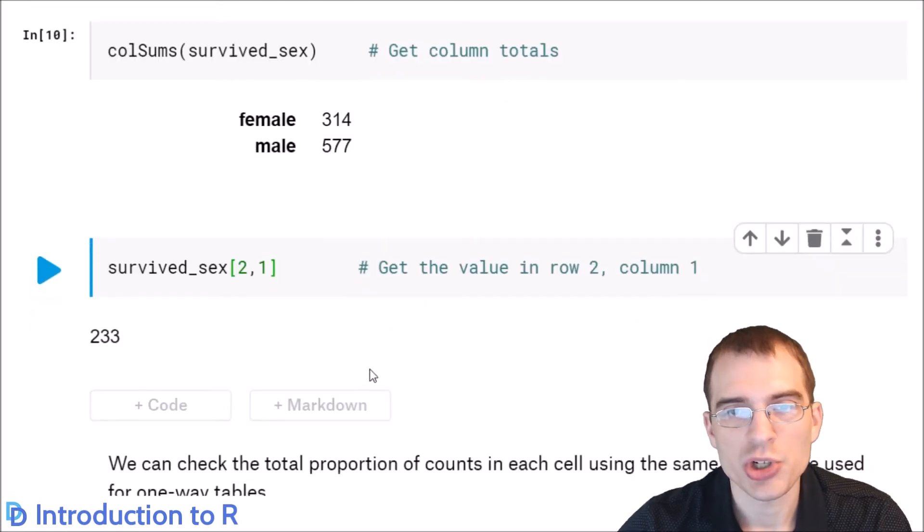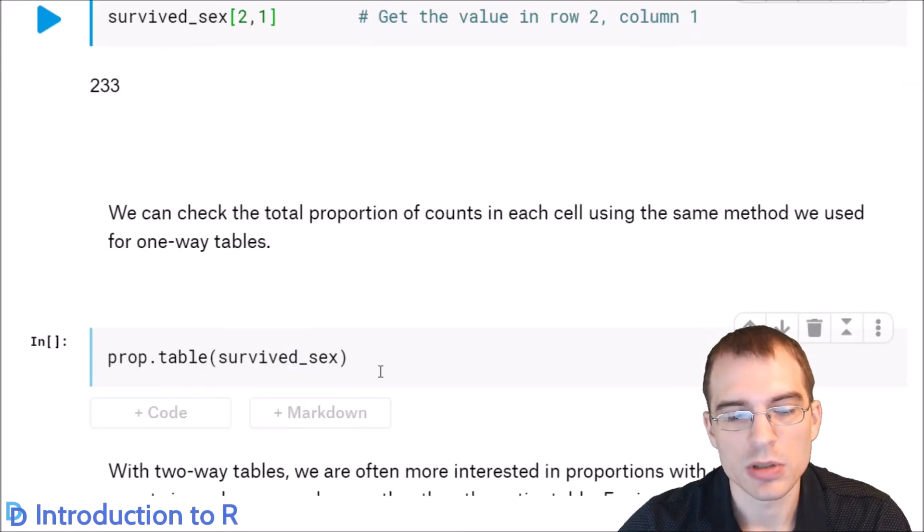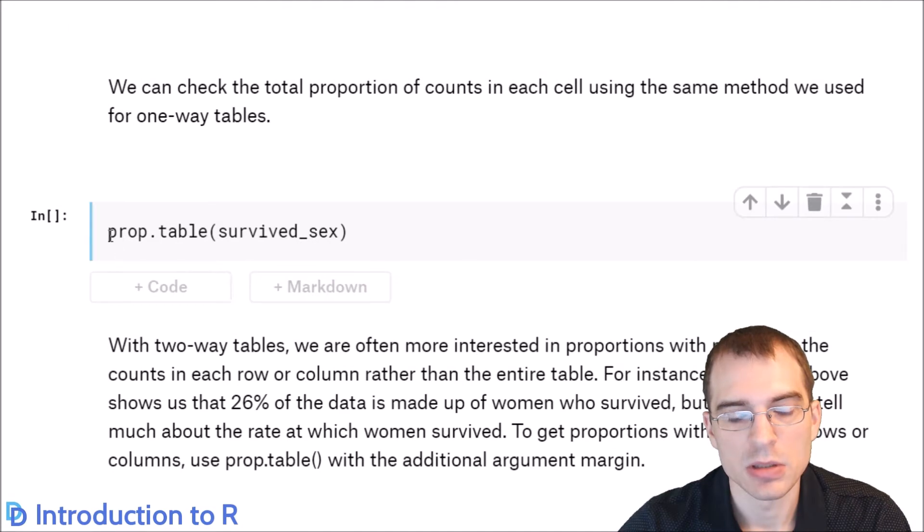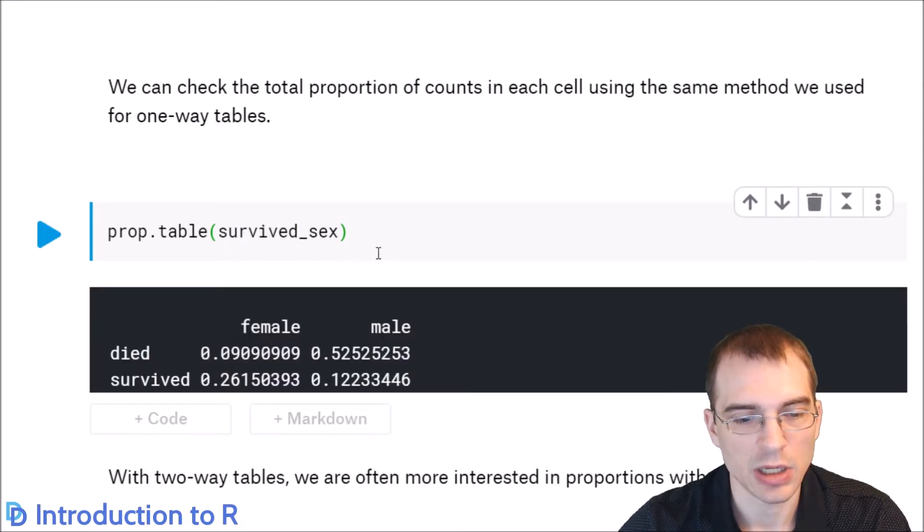And we can check the proportion of counts in a two-way table using that same prop.table function that we used before. So all we have to do is call prop.table. We'll just pass in the table that we have already made here, and it will show us the proportions for each of the categories. So we can see that around 50% of the data is males who died. Around 12% of the data is males who survived. Around 26% were females who survived. Around 9% were females who died.